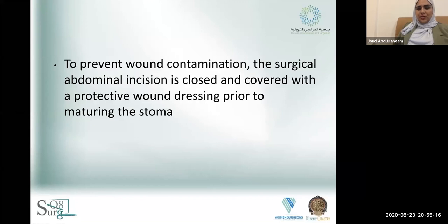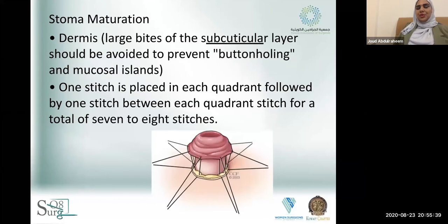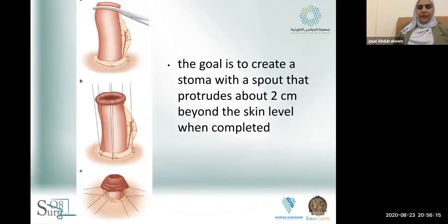After creating the stoma opening and bringing the stoma to the skin, you still haven't opened the stoma. You must first prevent wound contamination — cover your original laparotomy wound before opening the stoma, which contains stool. The most important step is stoma maturation: take bites from the dermis then the mucosa at four quadrants, then repeat between each stitch — up to eight stitches. The aim is to prevent mucosal islands, avoid contamination of the skin, and evert or spout the stoma to direct fluid away from the skin and avoid skin irritation.